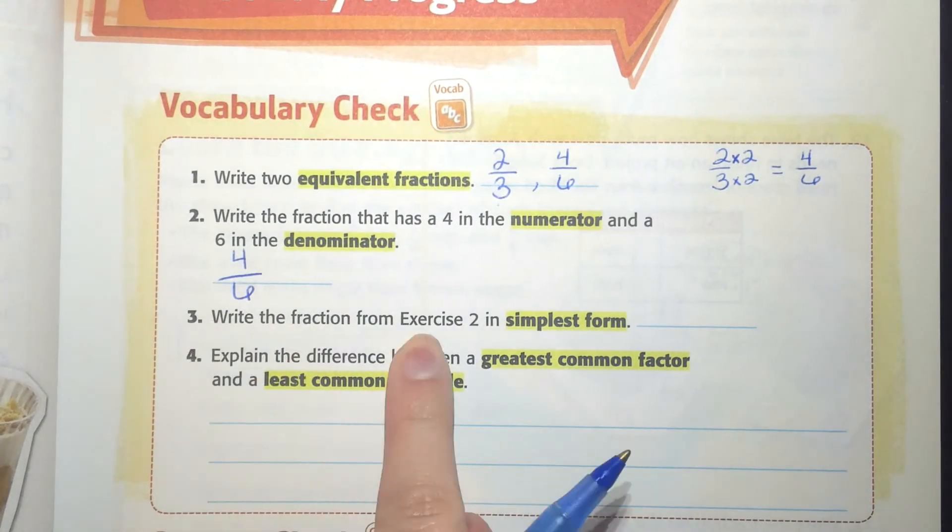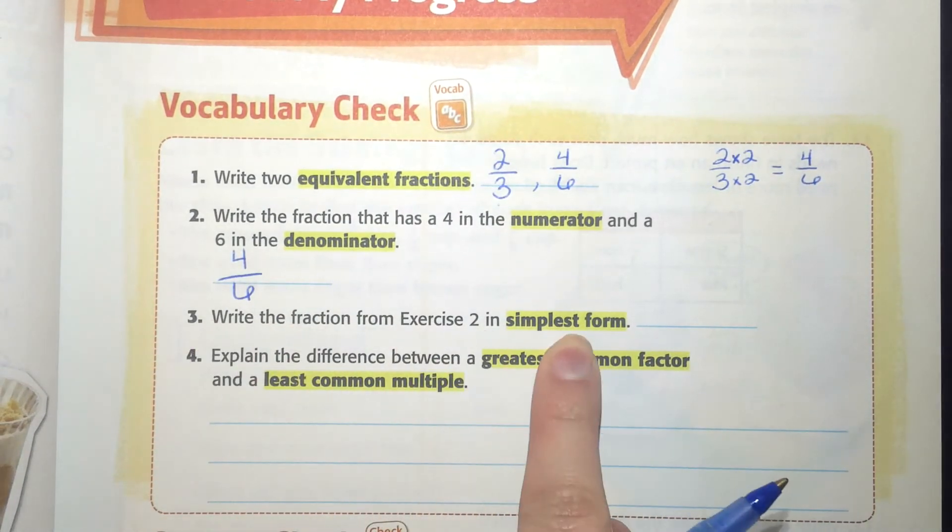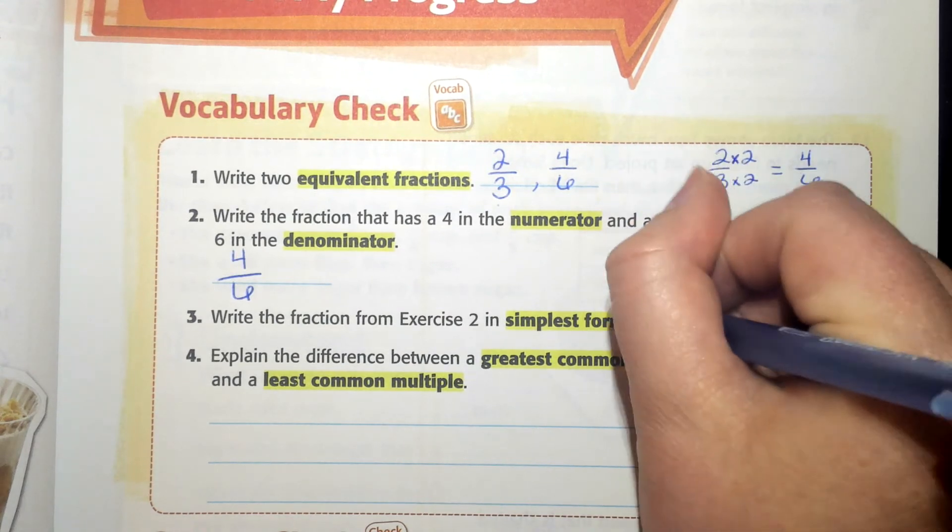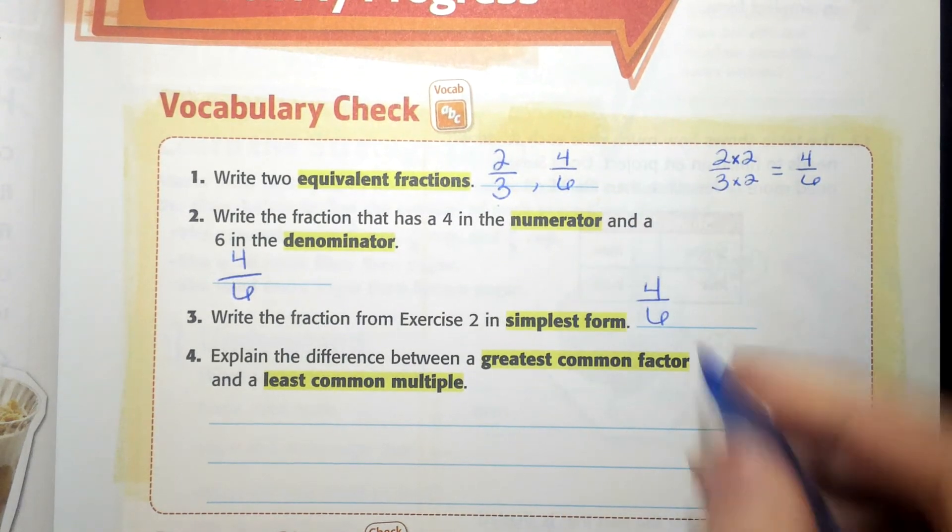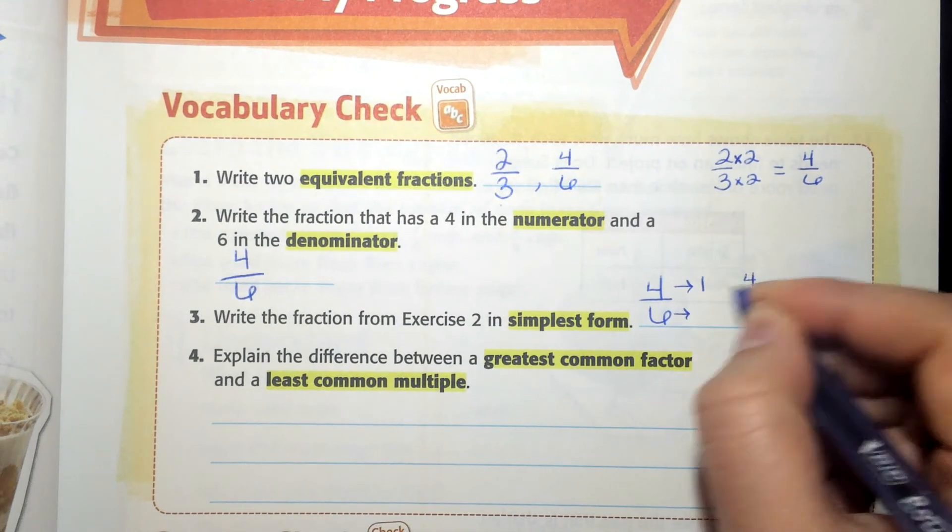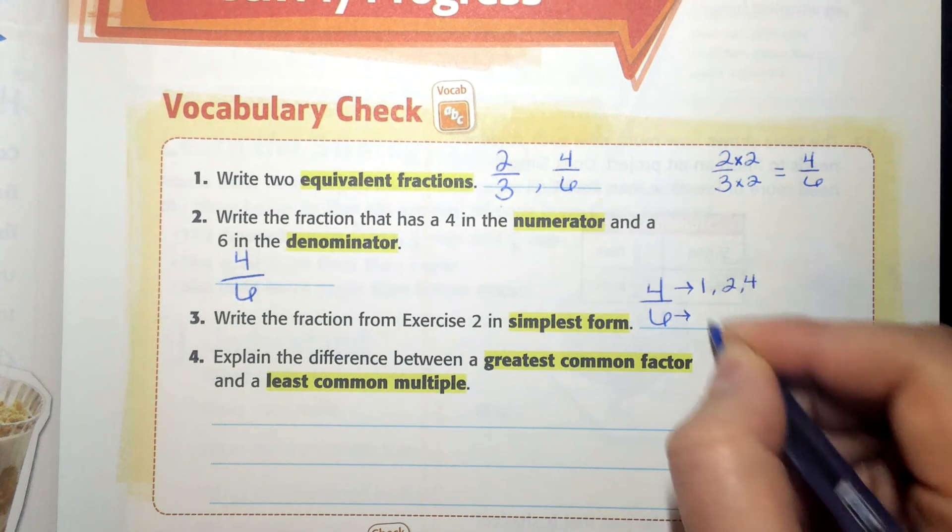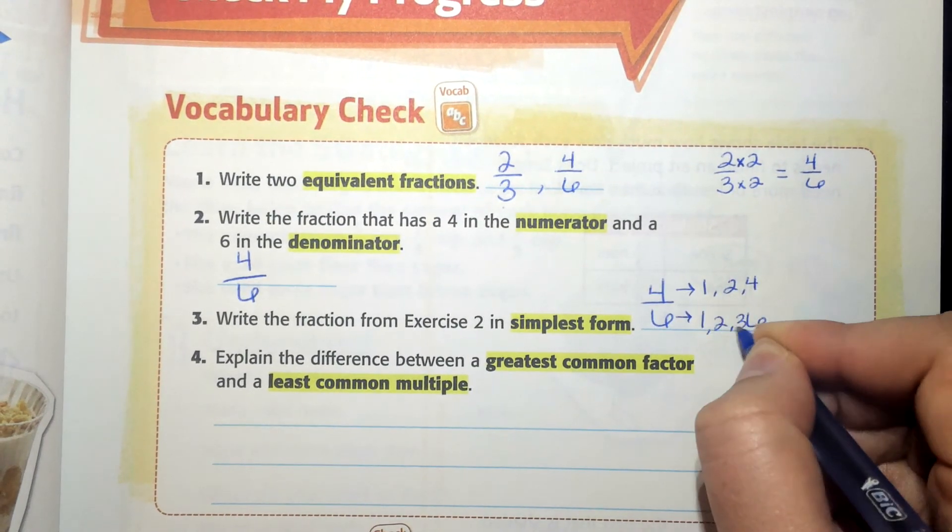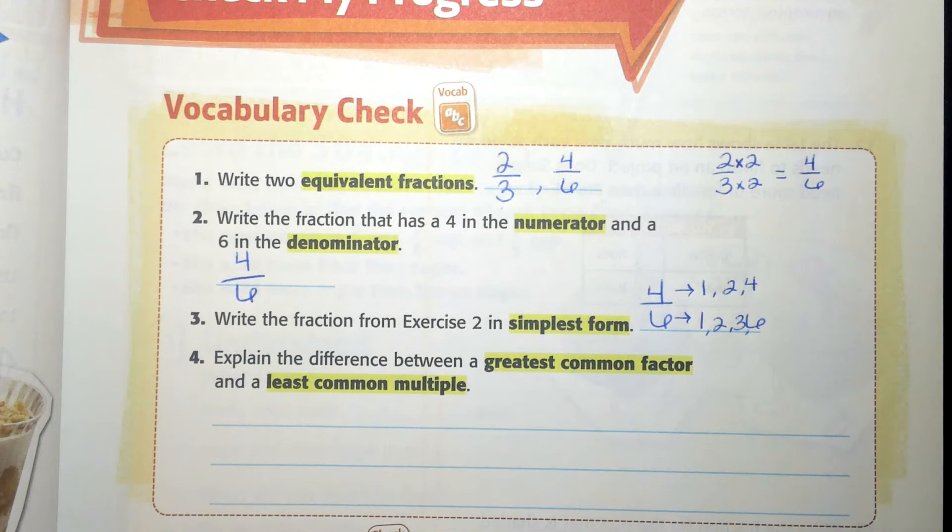Write the fraction from exercise two in simplest form. If I wanted to do that, I'm going to take four-sixths and I'm going to list all of its factors. One and four and two and two for four. One and six, two and three for six.